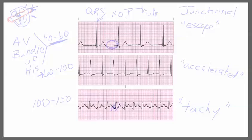When comparing these strips, we're going to look at the rate. The rate on the first one is 40. On the second strip, counting the complexes gives us about 80 to 90, give or take.